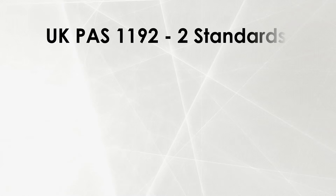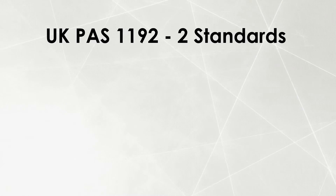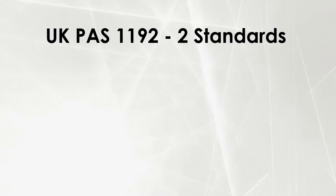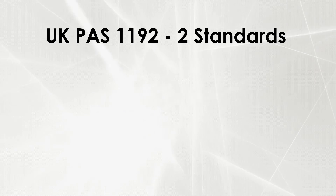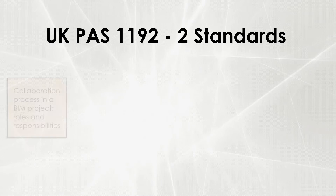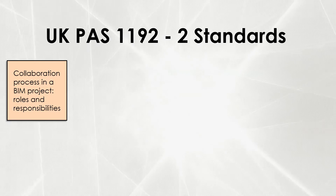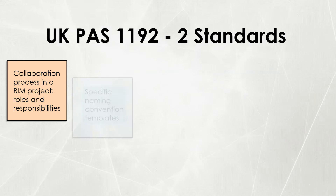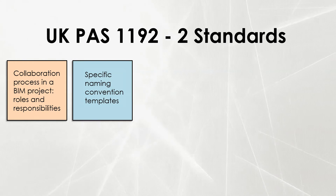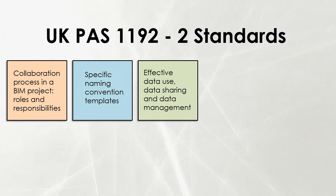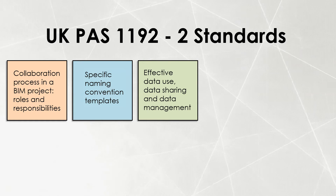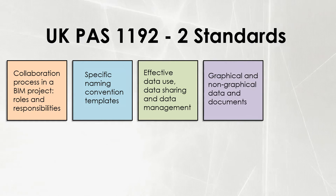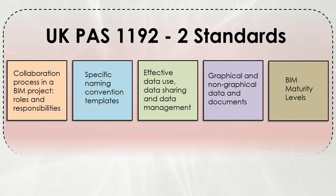In 2013, PAS 1192 Part 2 standards were published. This important document includes content around the collaboration process in a BIM project, including roles and responsibilities of different stakeholders, specific naming convention templates, methodologies to facilitate effective data use, data sharing and data management, graphical and non-graphical data and documents, and BIM maturity levels.